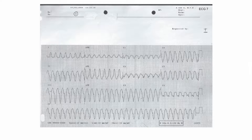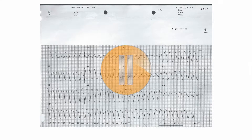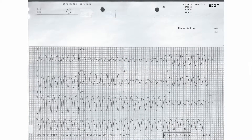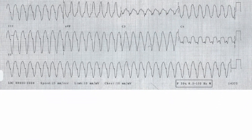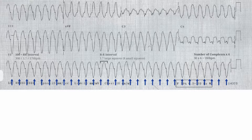This is the 12-lead ECG of a patient with hypotension and palpitations. Pause this recording now and interpret the ECG on your own before pressing play again. The rate is 180 beats per minute. The complex is broad, and this is therefore a broad complex tachycardia. This should immediately make you think of ventricular tachycardia, which is a medical emergency, and help should be sought from a medical expert at this point.